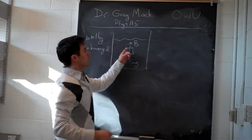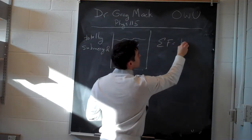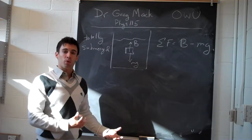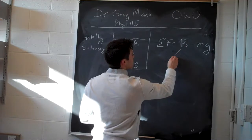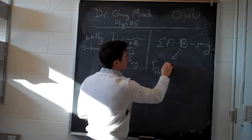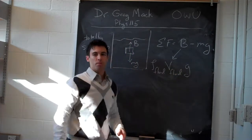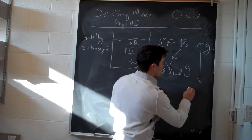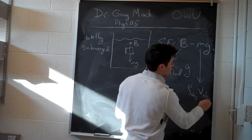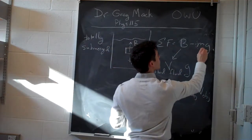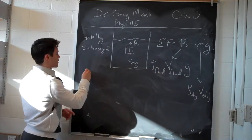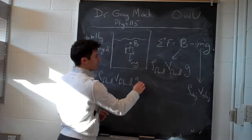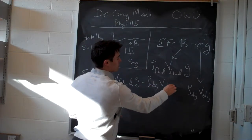The sum of our forces would be B minus mg. Let's put this in terms of densities: the buoyant force equals rho_fluid times V_fluid times g, and we change the mass into a density as well, so mg becomes rho_object times V_object times g. Therefore, the sum of forces equals rho_fluid times V_fluid times g minus rho_object times V_object times g.